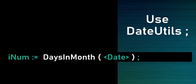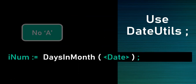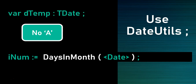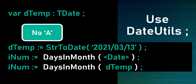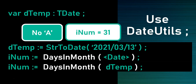There is another function called DaysInMonth — notice there's no 'A' in this one. Unlike DaysInAMonth, this one just takes a single TDate parameter. Because you give it a full date, it already has both the month and the year, so it can immediately work out the number of days. For example, if dtemp was the 13th of March 2021, passing it to DaysInMonth would return 31.